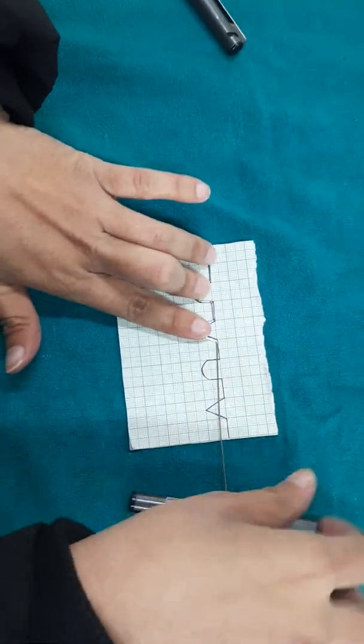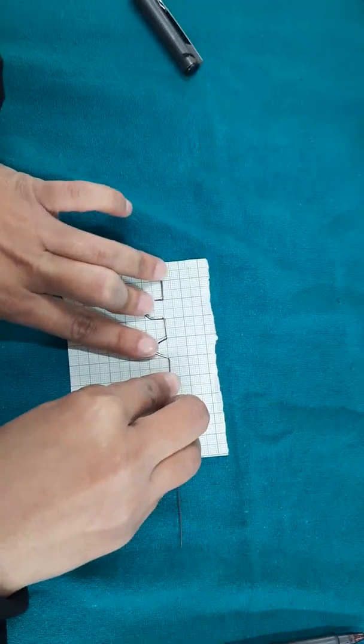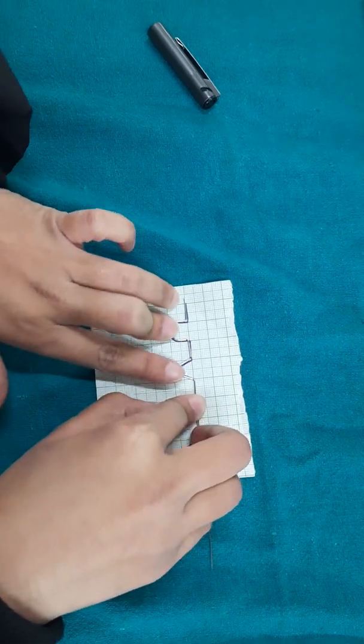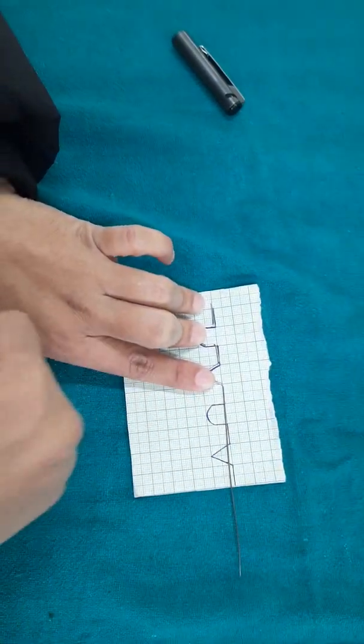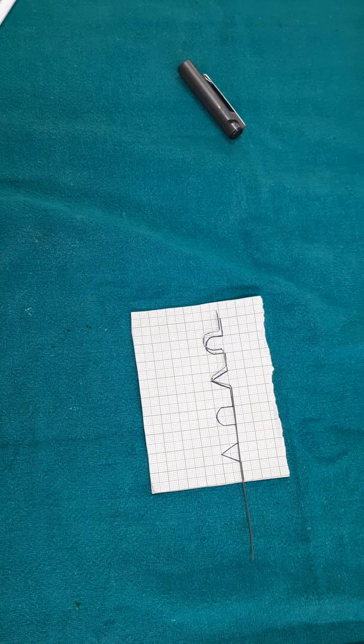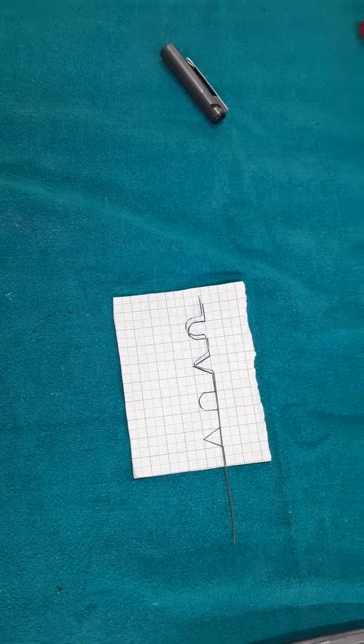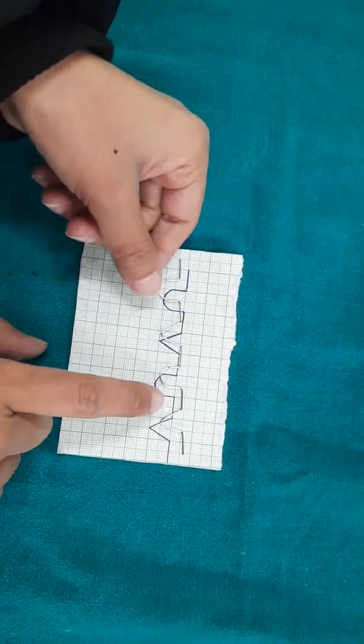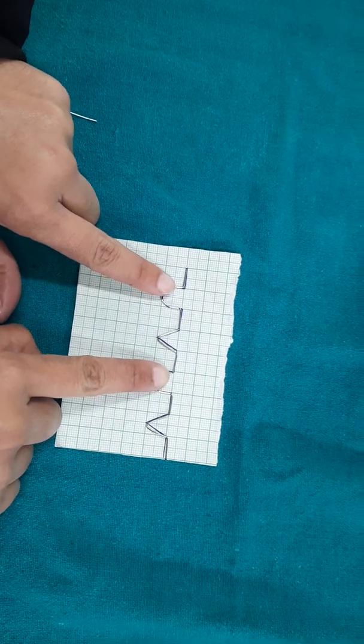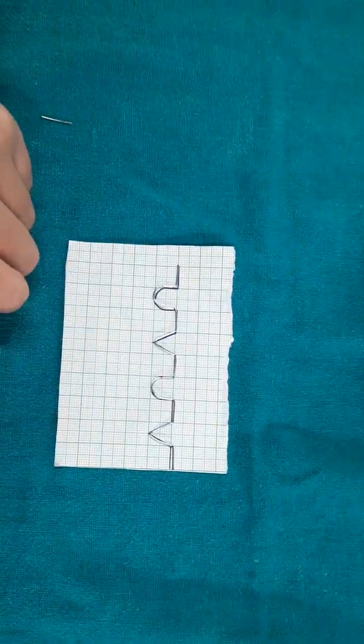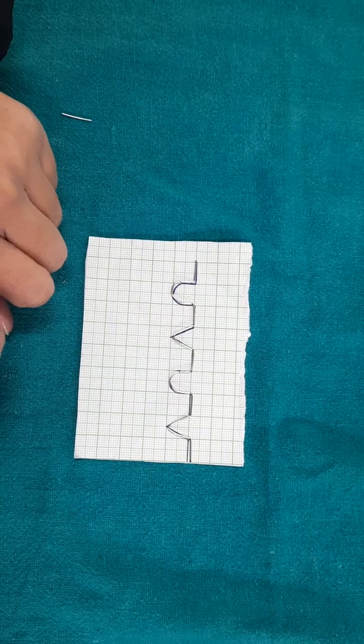Now again adjust the wire on the graph paper. Now another set of U and V in the same manner. Now adjust the U and V on the graph paper and you can see the U and V from all the sides.